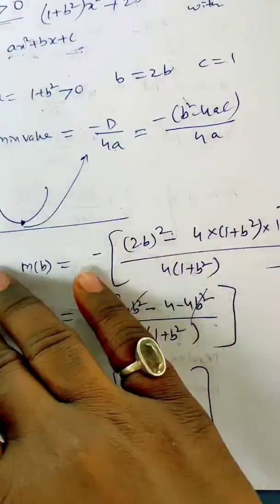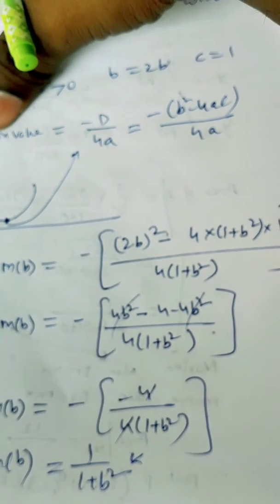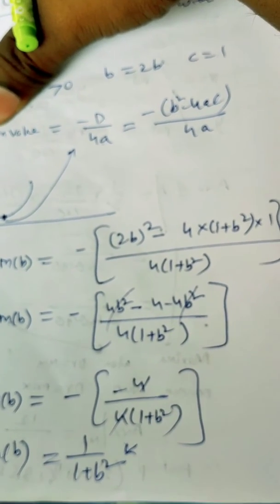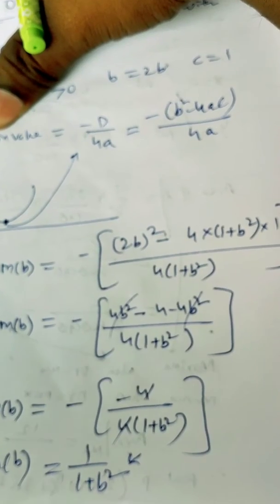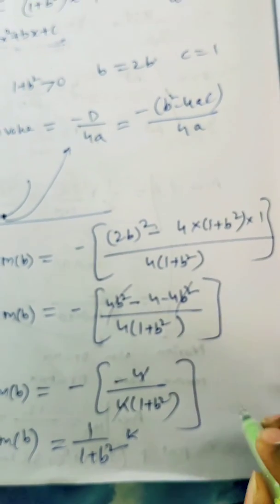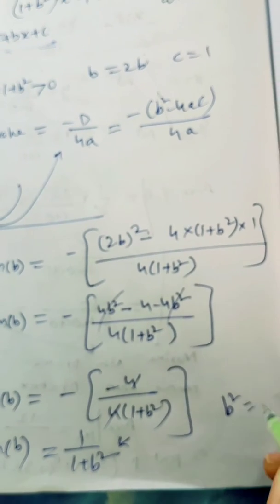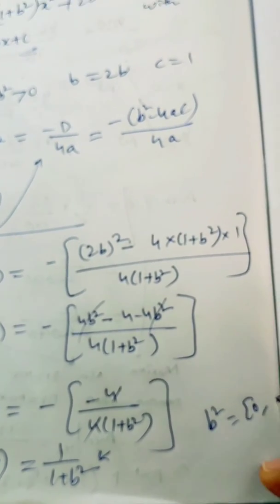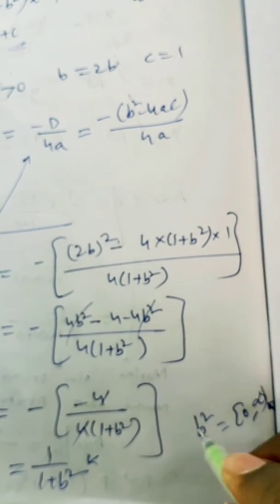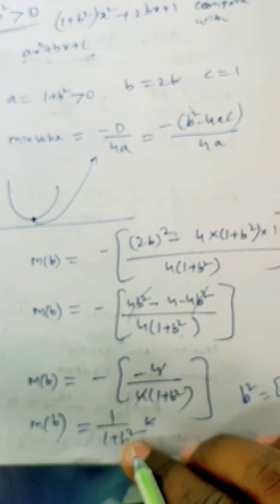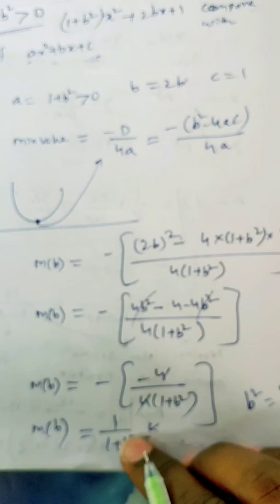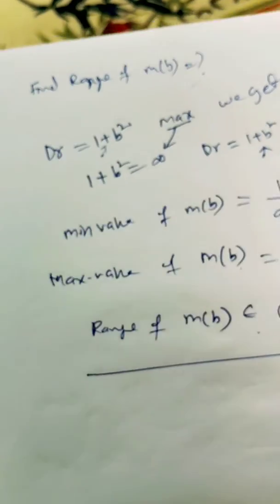If I keep any number, b is any real, and I substitute in that, the range of b² is 0 to infinity. The b² range will be [0, ∞). If I keep maximum, I get minima. If I keep minimum, I get maxima. Keep this in mind.